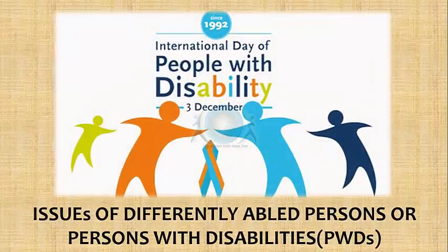This essay is about differently abled persons, or persons with disabilities, that is PWDs. It is derived from the May 2016 issue of Yojana on the topic of differently abled or persons with disabilities, and it summarizes the issues completely with social inputs from other articles.